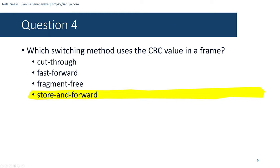Question number twenty-eight: What is contained in the trailer of a data link frame? Options are logical address, physical address, data, or error detection. The answer is error detection, because in a layer 2 switch, the trailer contains the error detection field — the CRC value used for frame check sequence.